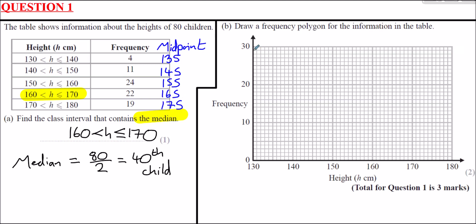We're plotting midpoints versus frequencies. The first point is 135 along and up to 4. Then 145 and up to 11; 155 and up to 24; 165 and up to 22; and 175 along and 19 up. Finally, we draw straight lines from dot to dot — that's the frequency polygon. That concludes question 1.